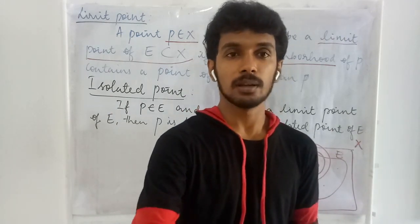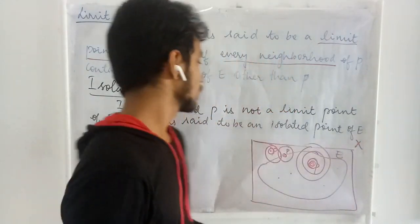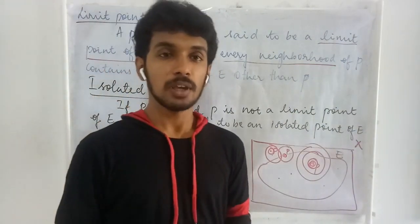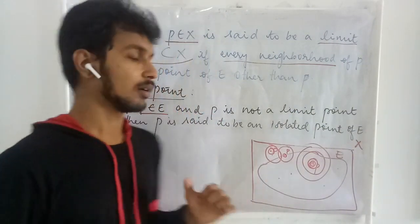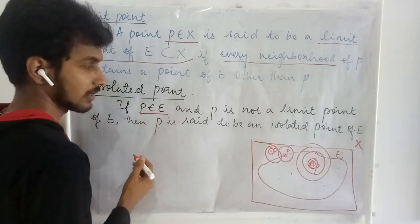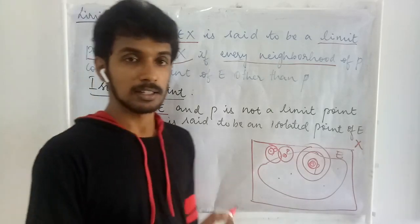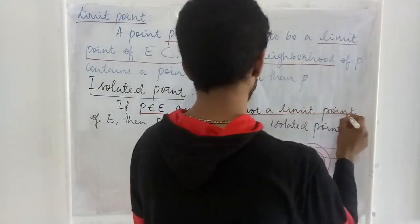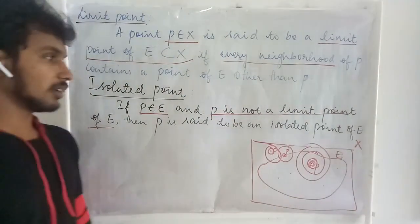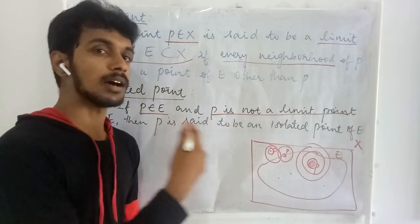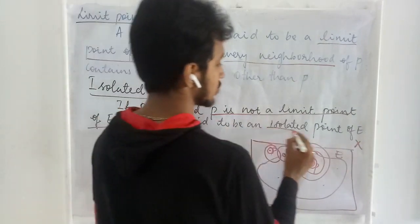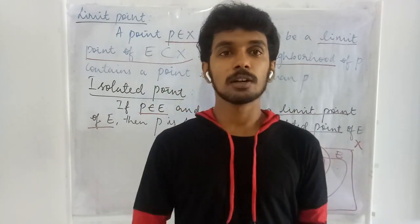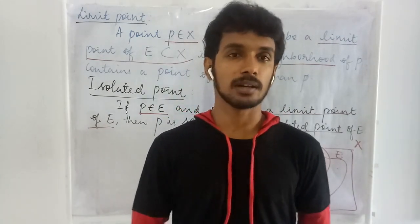With this understanding of a limit point, now let us get into the next definition: isolated point. In order to define an isolated point, we have to take a point of the set. We examine whether it is a limit point of the set or not, and if we find that it is not a limit point of the set, then that is called an isolated point. So an isolated point is a point of a set which is not a limit point of the set.